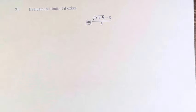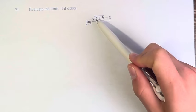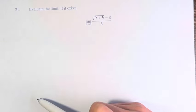Hello and welcome back to another video. In this problem, we're asked to evaluate the limit, if it exists, for the limit as h approaches 0 of the square root of 9 plus h minus 3 over h.